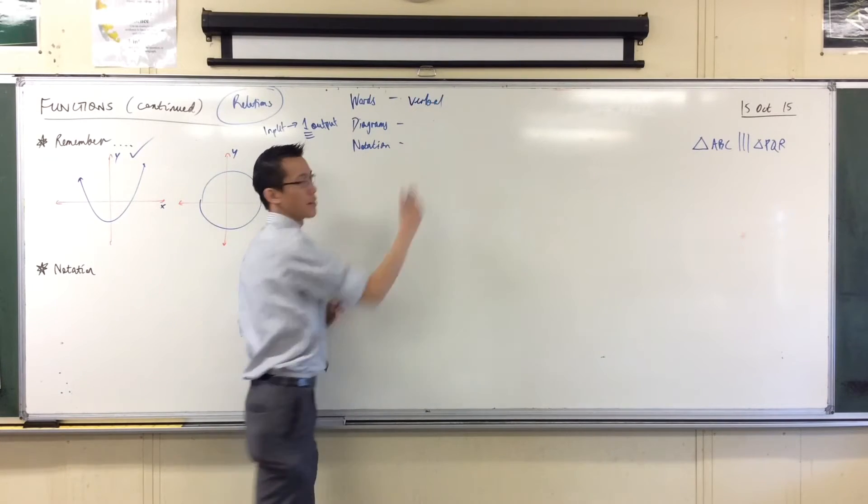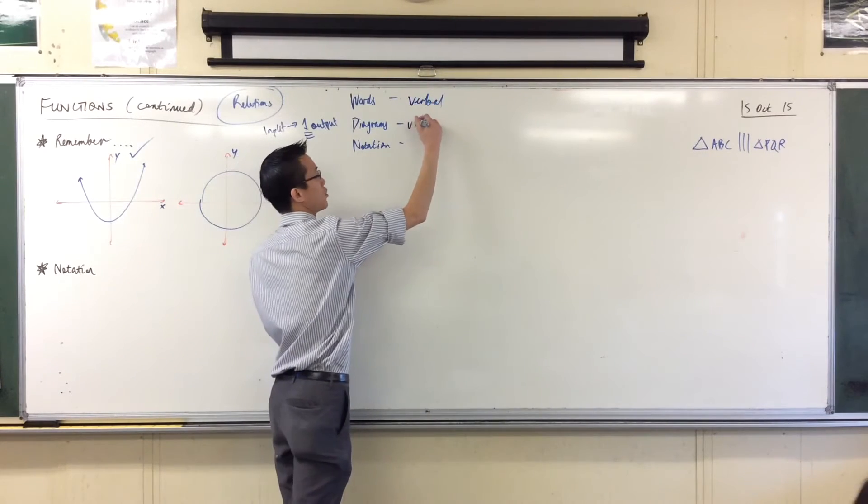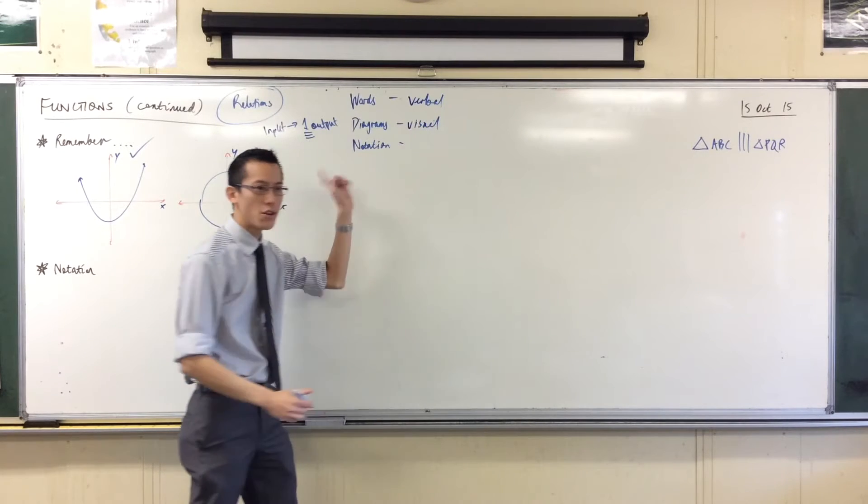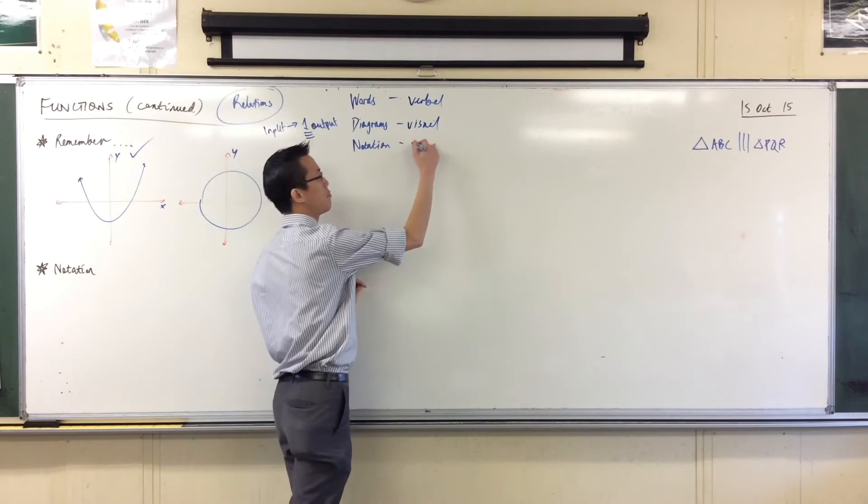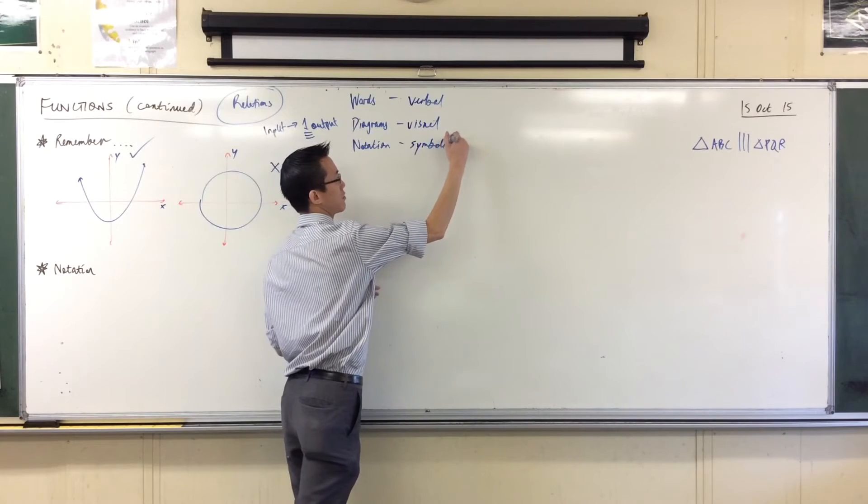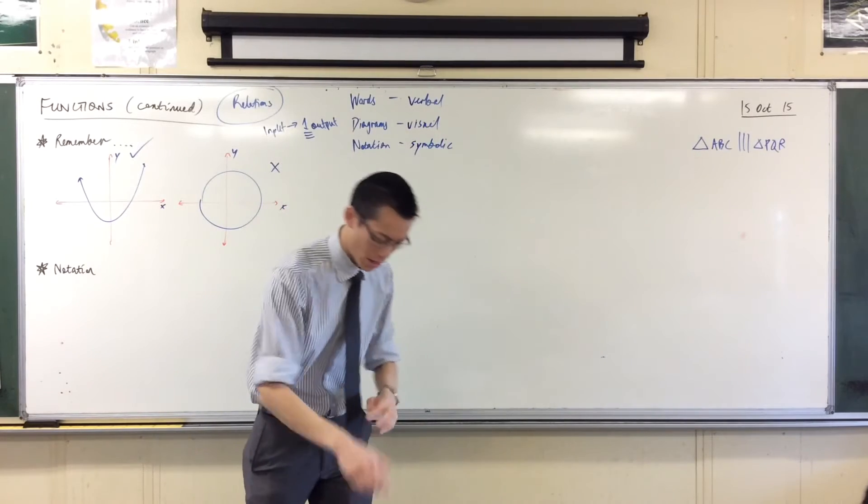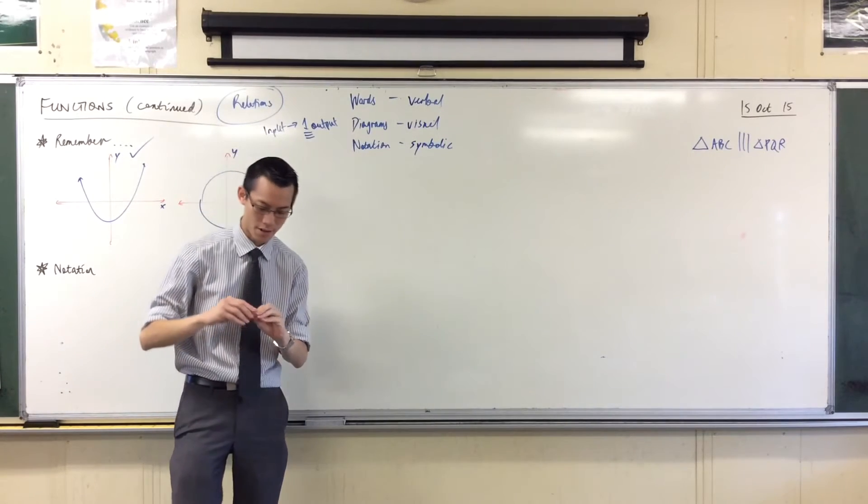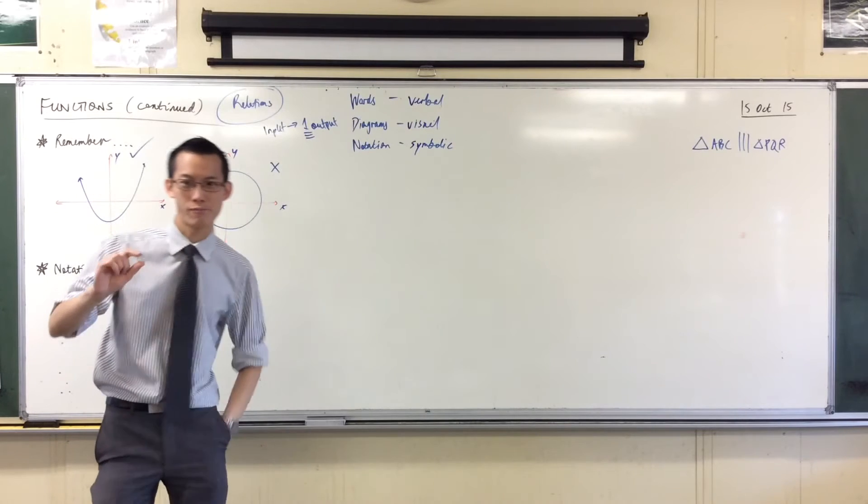Words are verbal. Diagrams are visual, and notation is symbolic. We use symbols. We use symbols all the time. For instance, I'm wearing a symbol right now.